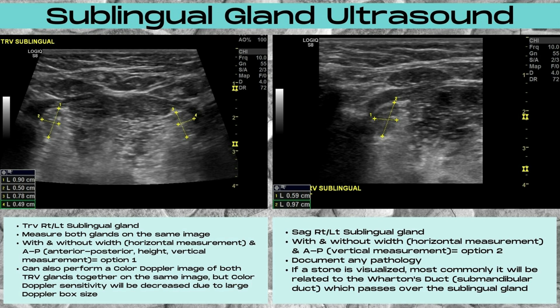You want to ensure you include a width measurement (horizontal) and an AP measurement (height or vertical), as well as a transverse color Doppler image. If a stone is visualized, most commonly it's going to be related to Wharton's duct — the submandibular duct — as it passes over the sublingual gland, although on ultrasound this may appear to be part of the sublingual gland itself.